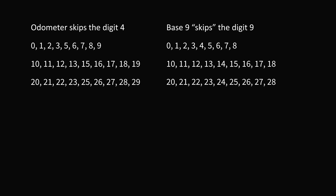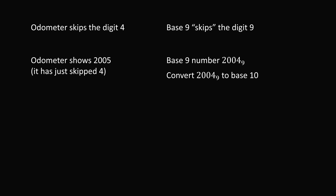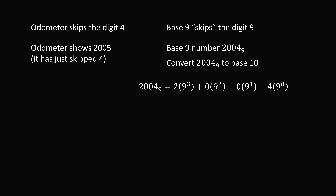We need a slight adjustment. The odometer is showing 2005, meaning it has just passed the number 4. Imagine counting in base 9 — we get to 2004. We convert 2004 in base 9 to base 10: 2 × 9³ + 0 × 9² + 0 × 9¹ + 4 × 9⁰ = 1458 + 0 + 0 + 4 = 1462. That gives us the answer using a very interesting technique from number theory.